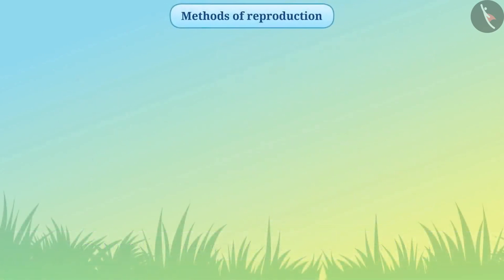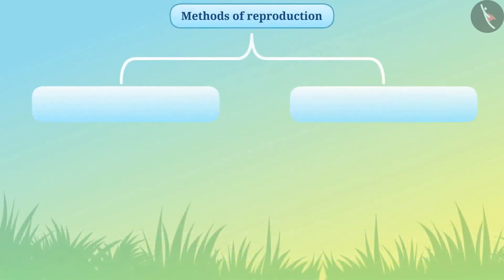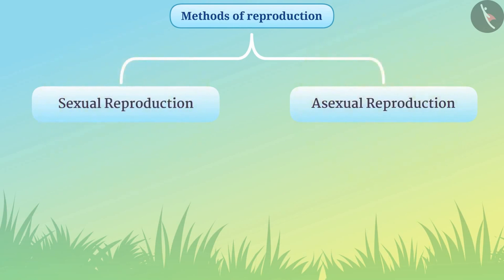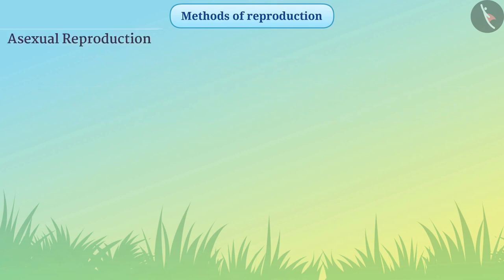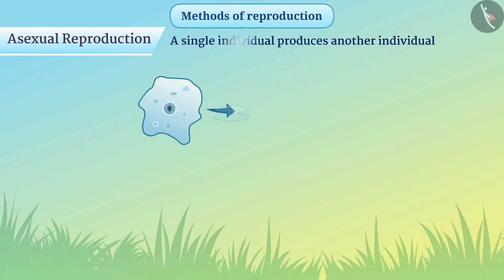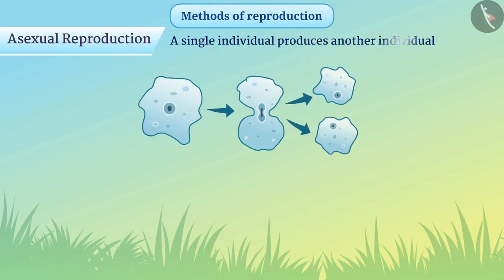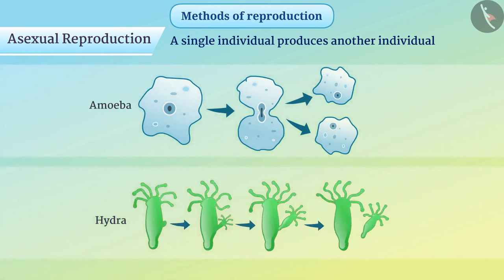We know there are two methods of reproduction: sexual reproduction and asexual reproduction. The method of reproduction in which a single individual produces another individual is called asexual reproduction. For example, unicellular organisms like amoeba and hydra produce their next generation by asexual reproduction.